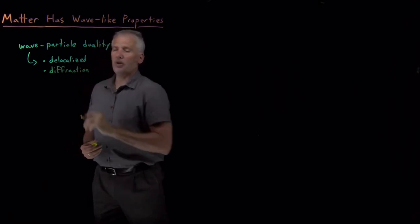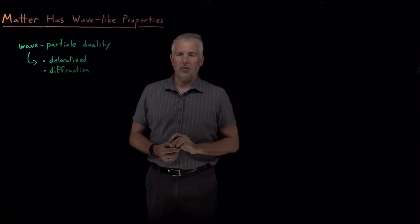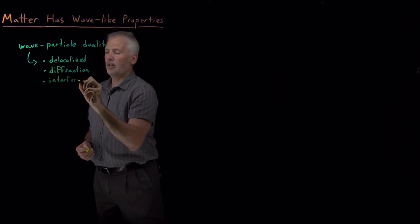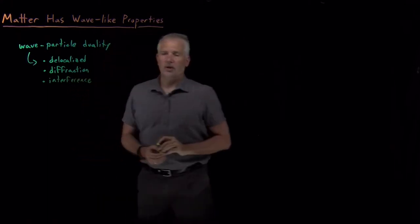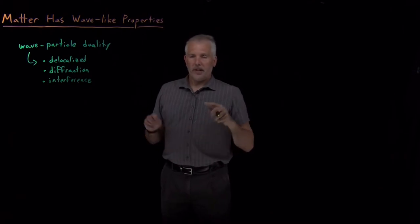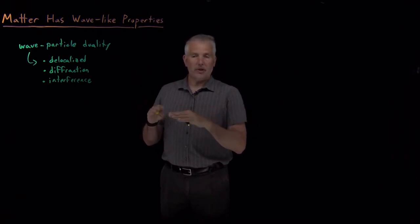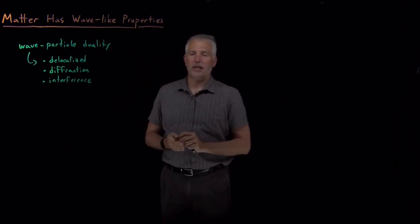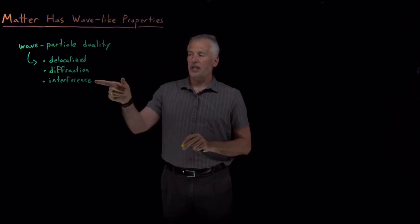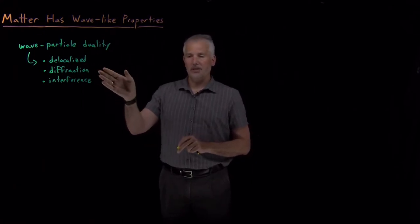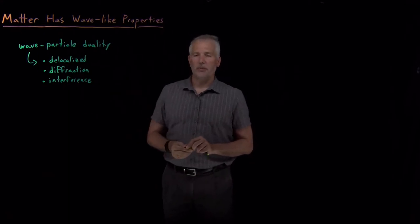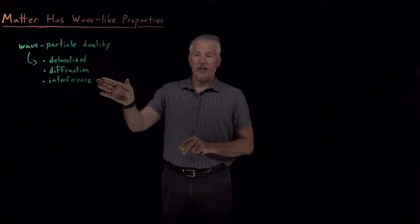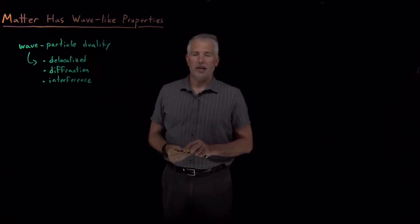Two other things that matter can do that we normally think of as wave-type behavior: it can diffract and it can interfere with other waves. If I take two waves and cross them, they can either interfere constructively or destructively, depending on whether two peaks or troughs hit at the same time, or whether a peak hits at the same time as a trough and they destructively interfere. That type of interference and diffraction — when a wave bends as it passes around an object or through different media — those are properties we think of as describing how waves behave, but they also describe how matter behaves under certain circumstances.